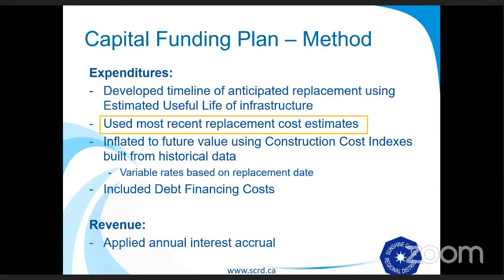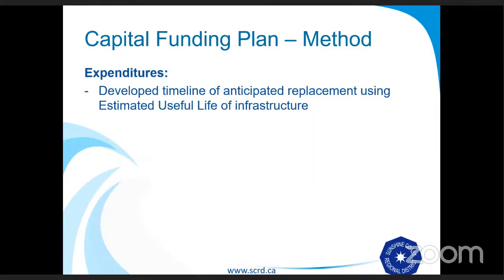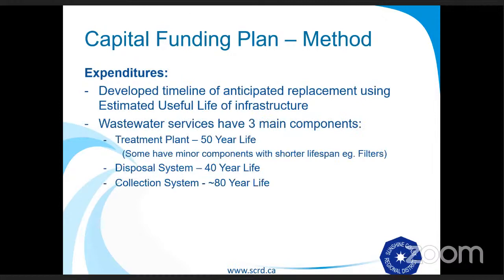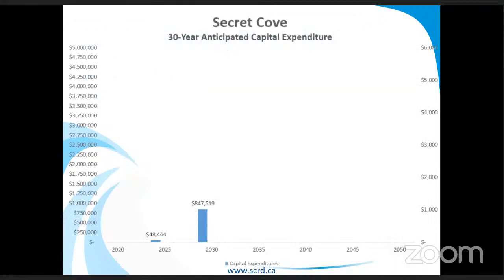In order to reduce the effect of inflationary values, we've used the most recent replacement cost estimates. So if we have a system we've recently replaced that is similar in size, we would use that construction cost estimate to give us a more accurate idea. These are all still just estimates, though. When we talk about useful life of the infrastructure, there are three main components in your wastewater service with quite long lifespans: 50 years for a treatment plant, 40 years for a disposal system, and 80 years for the collection system. If our window of study is too small, we're not going to pick up certain components and won't plan to have enough finances to replace them. So we looked at three different windows when constructing these models. The first is a 30-year window, which is what you see on your screen now.